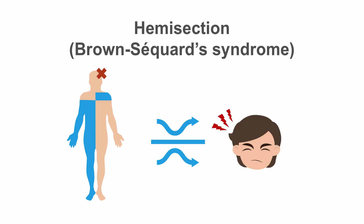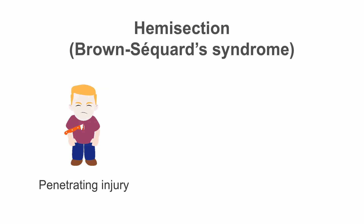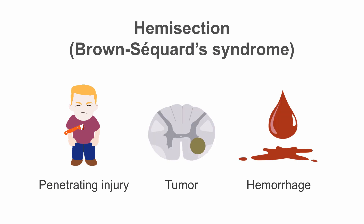Pain and temperature loss below the level of the lesion is contralateral. Though pure hemi lesions are rare, understanding the ramifications will help with localization. This type of injury can be sustained with gunshot wounds, other penetrating injuries, tumors, or hemorrhages.